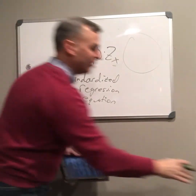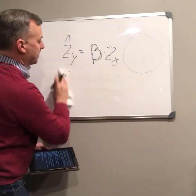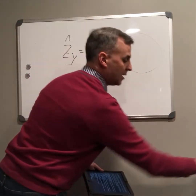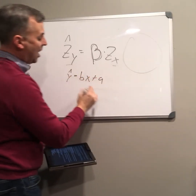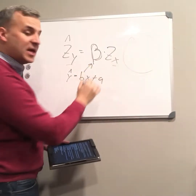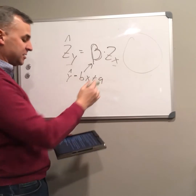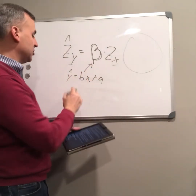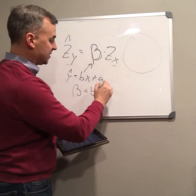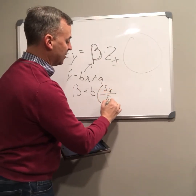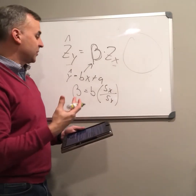If I have a regular regression equation, I can convert b into beta. If SPSS or whatever gives me the numbers for this equation — tells me b and a — I can do a conversion. Beta is equal to b times the standard deviation of x over the standard deviation of y.